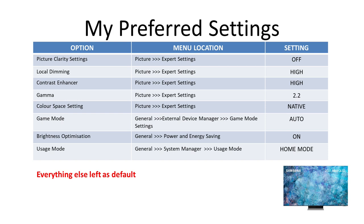Next is Game Mode. This lets the TV bypass some picture processing — it may reduce lag but may also alter picture quality. I have this set to Auto, so that my TV automatically switches to Game Mode when I turn on my gaming console. Next is Brightness Optimisation. I'm a big fan of this setting — a light sensor built into the TV will brighten or darken the screen based on the room's light level, done slowly and subtly with no sudden noticeable changes. Samsung have this spot on, so I have it set to On, though you can alter it if you wish.